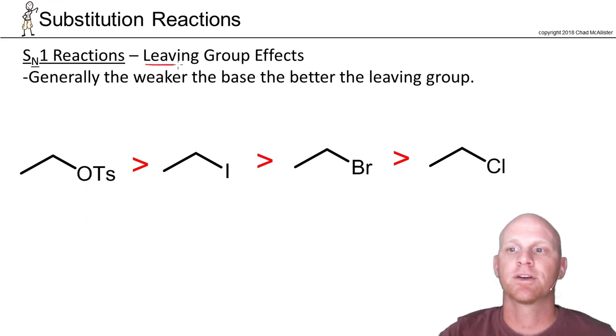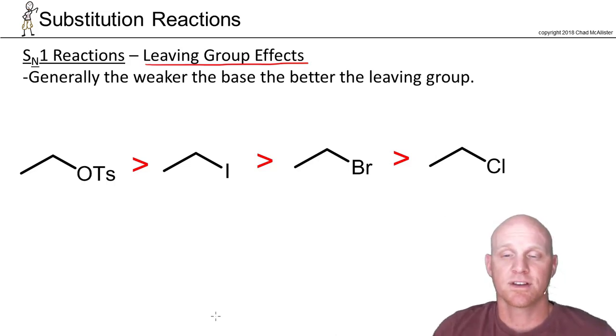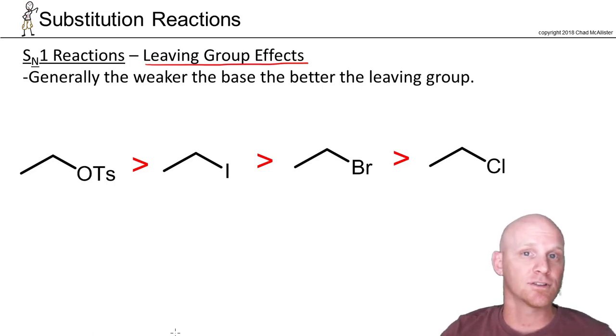Finally, we're going to talk about some leaving group effects here. And this is the one thing SN1 and SN2 have in common. They both have the same leaving group trend. And the reason is because the leaving group leaves in both reactions in the rate determining step. So in an SN1 reaction, the rate determining step is simply the leaving group leaving. Whereas in an SN2 reaction, you have nucleophilic attack and the leaving group leaving.